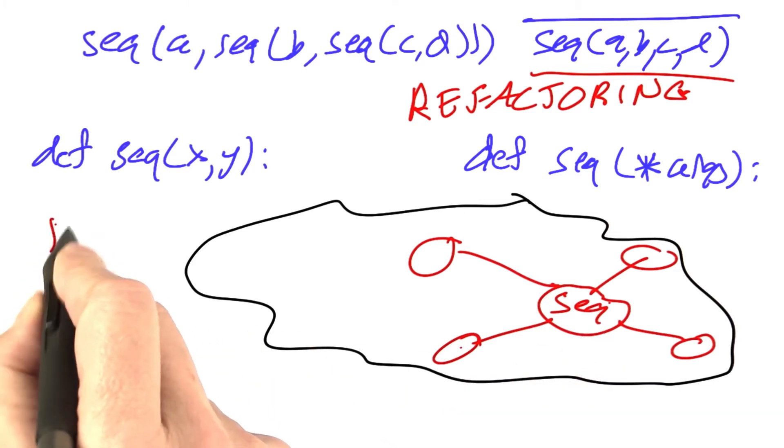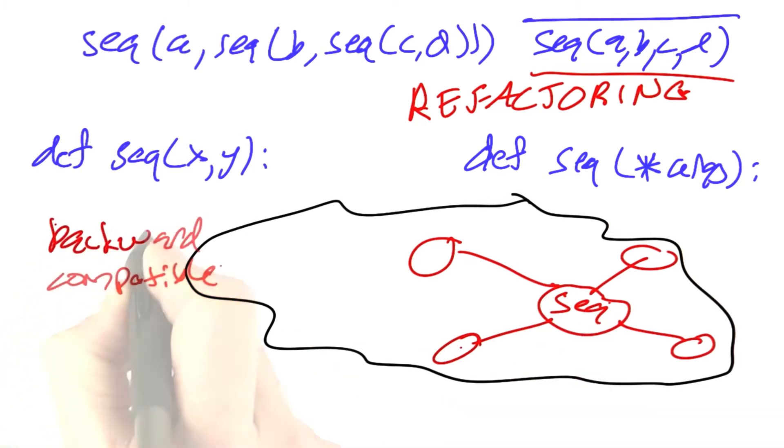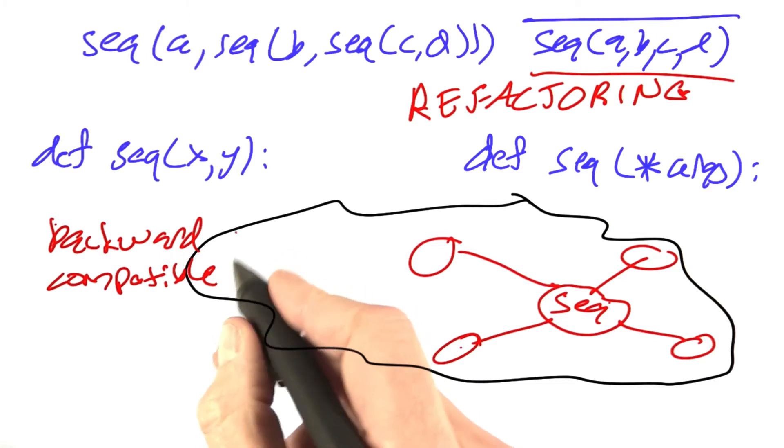One is, is the change backward compatible? That is, if I make some change to sequence, am I guaranteed that however it was used before, that those uses are still good, and they don't have to be changed? If so, then my change will be local to sequence, and I won't have to go all over the program changing it everywhere else. That's a good property to have.